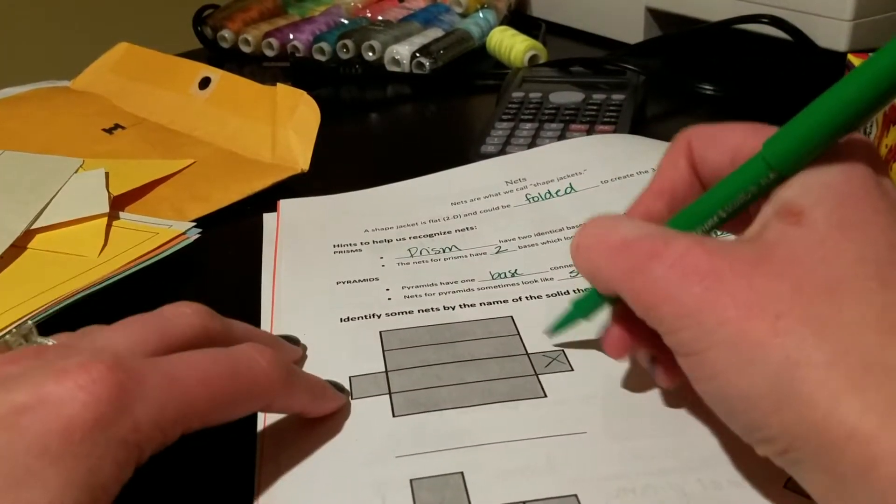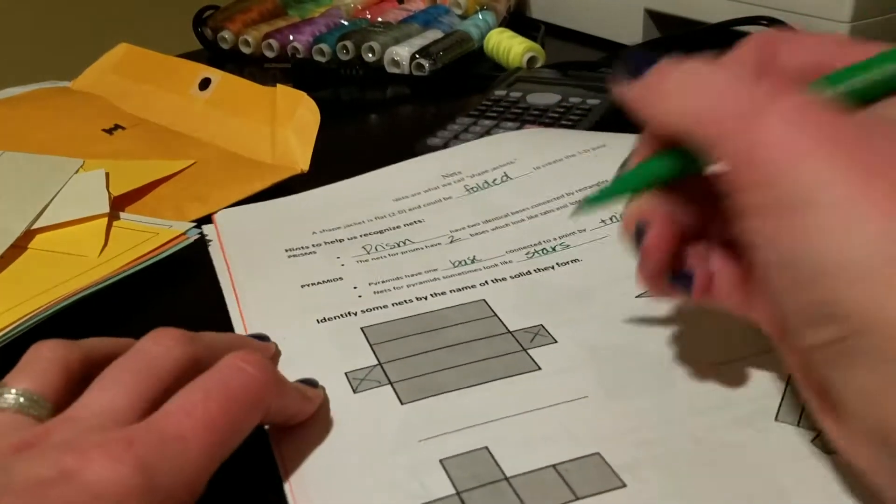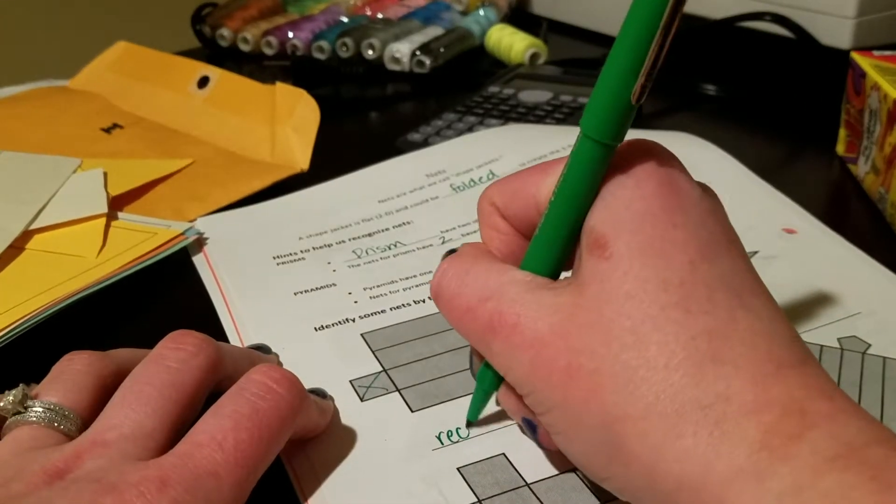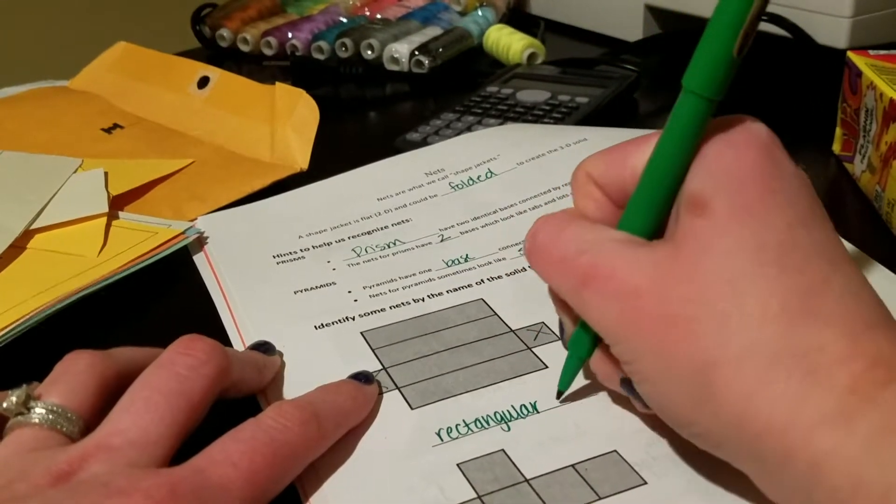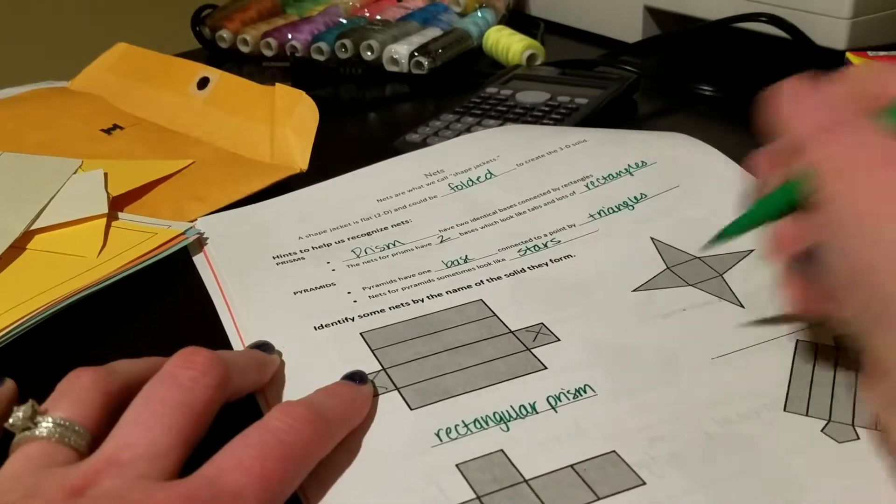This right here, the two tabs, those are your bases, all rectangles, which tells me it's a prism. So those bases are going to be considered rectangular, so we're calling them a rectangular prism.